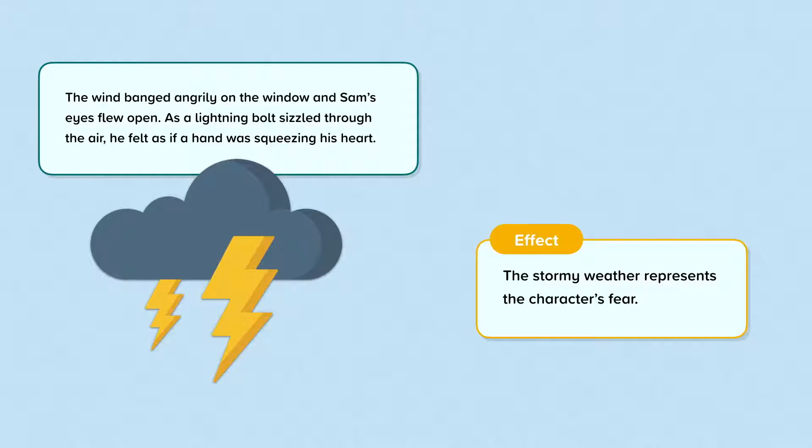In this example, the writer is describing stormy weather, with a noisy wind banging on the window and lightning striking. The stormy weather represents the character's fear.